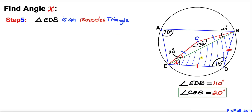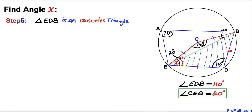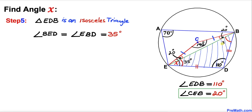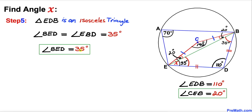Now focusing on triangle EDB, this is also an isosceles triangle since ED equals BD. Therefore the two base angles are equal. Since the angles sum to 180 degrees and angle EDB is 110 degrees, each base angle must be 35 degrees. So angle BED is 35 degrees.